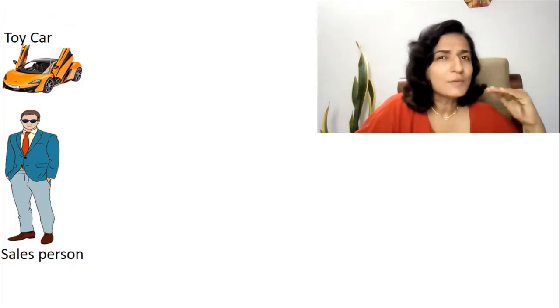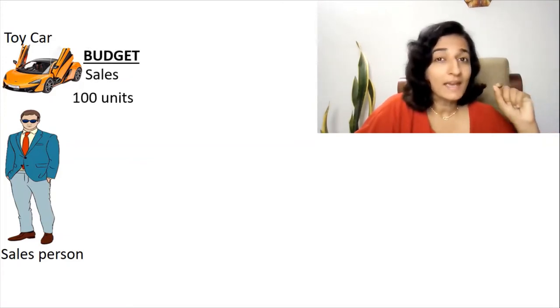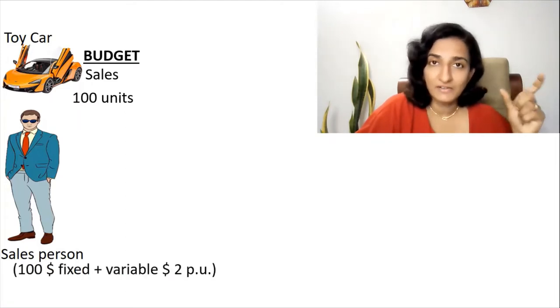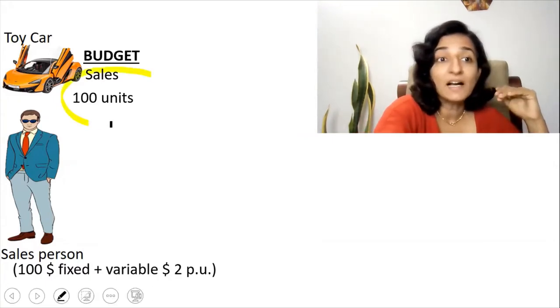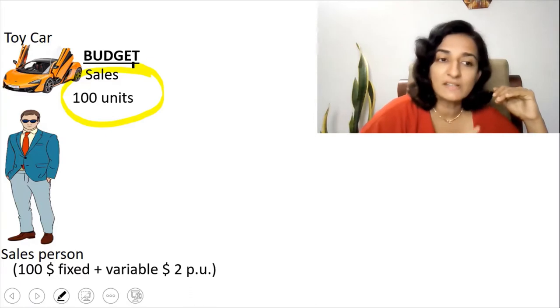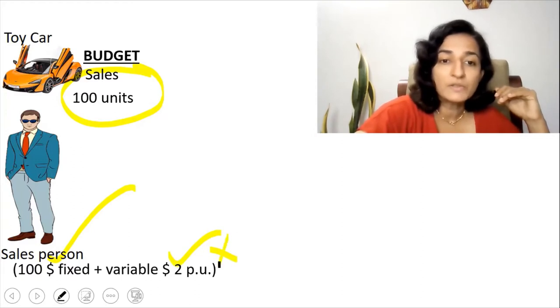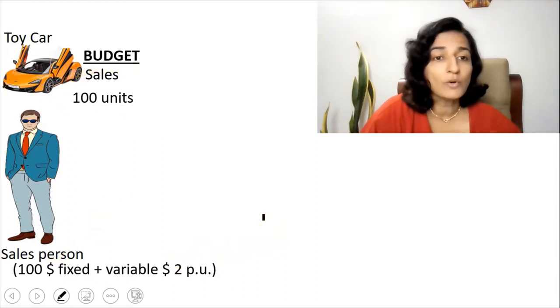Suppose you are a toy manufacturer, and you have certain salespeople to whom you are paying a fixed commission and also a variable commission — that is, a commission based on the units that they sell. Suppose your budgeted sales of the toy car is 100 units, and the commission you pay to the salesperson is $100 fixed plus a variable amount of $2 per unit. So if you are selling 100 units, the commission is $100 fixed plus $2 per unit for 100 units — so $100 plus $200.